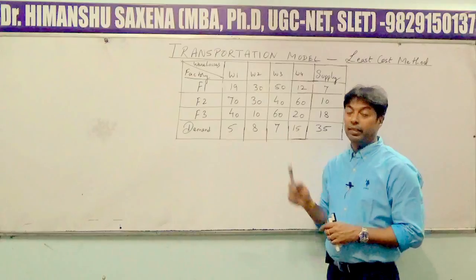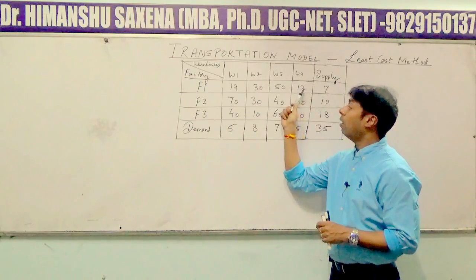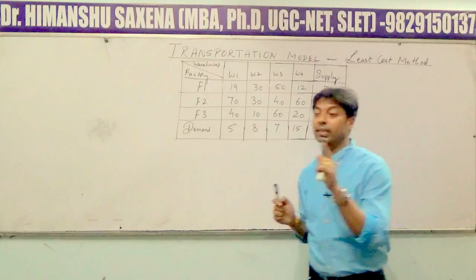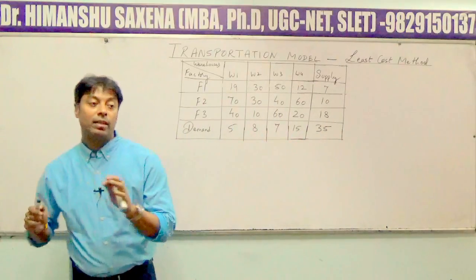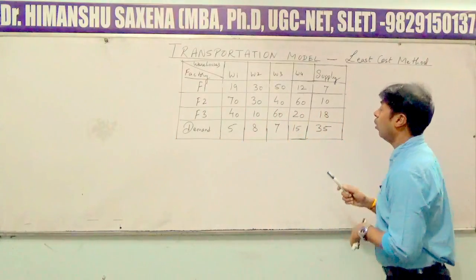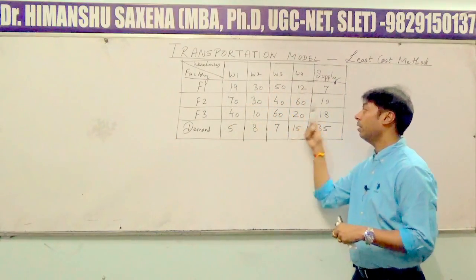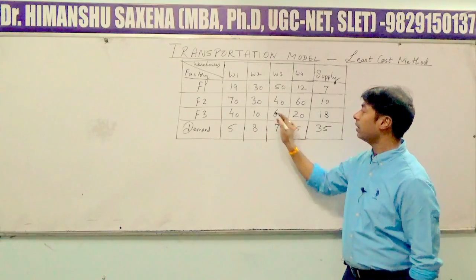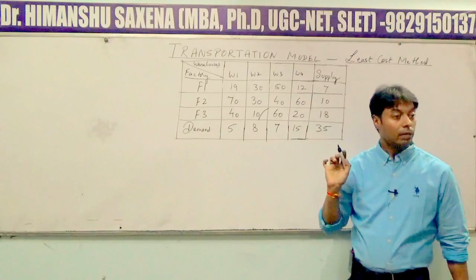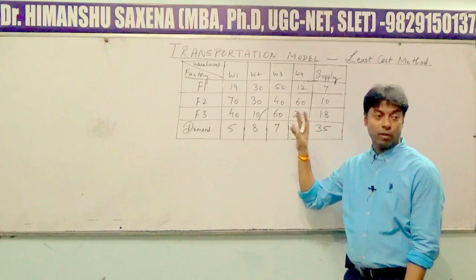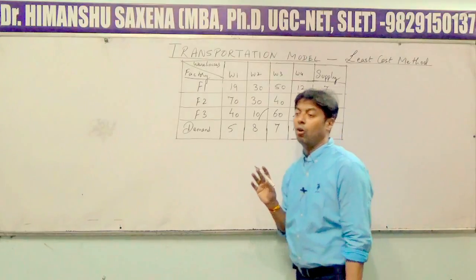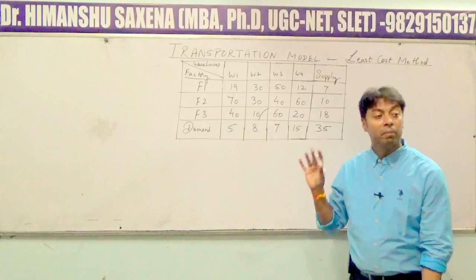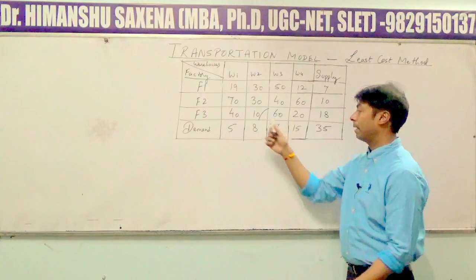Let us start with the least cost method. From all the cost cells, you have to select the cell with the minimum value. From all the rows, we can ascertain that the least cost cell is 10.